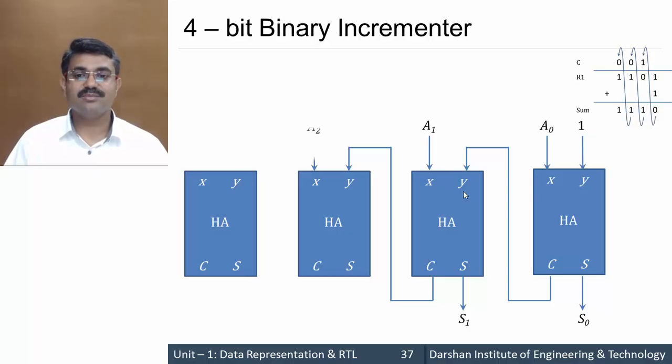Similarly, it is carried out for the third bit of the register, A2, which gives S2 sum and carry propagated to the next half adder. The last half adder, the MSB half adder, gives output S3 and C4.